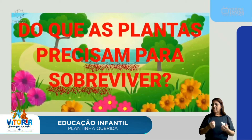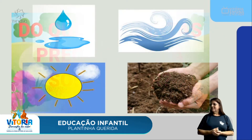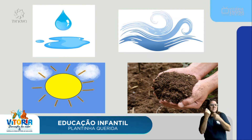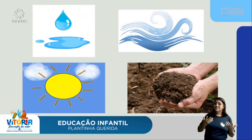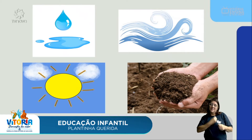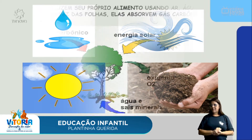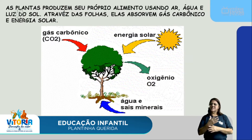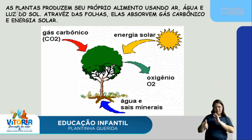Agora a gente vai falar um pouquinho sobre do que as plantas precisam para sobreviver. As plantas precisam de água, precisam do ar, precisam da luz e do calor do sol e precisam da terra, pois elas vão tirar da terra todos os nutrientes que precisam para sobreviver. As plantas produzem o seu próprio alimento usando o ar, a água e a luz do sol.